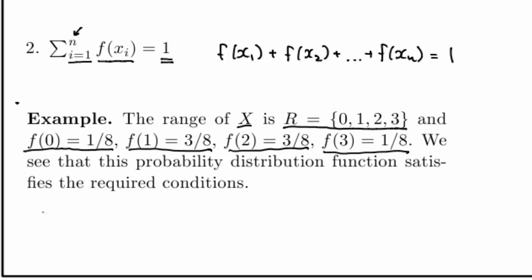In this case, n is equal to 4, my x1 first possible outcome is 0, x2 is 1, x3 is 2, and x4 is 3.